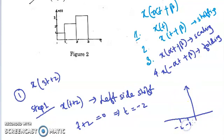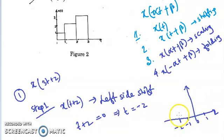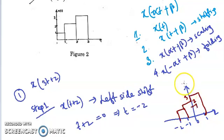So the signal will start from T = −2. The axis values are: −2, −1, 0, 1, 2. This is X(T+2).